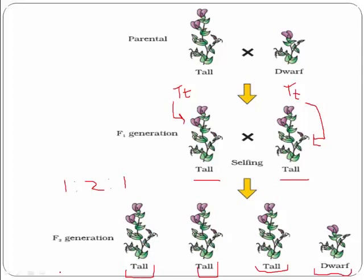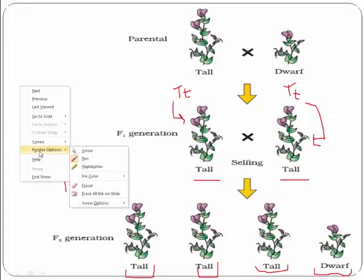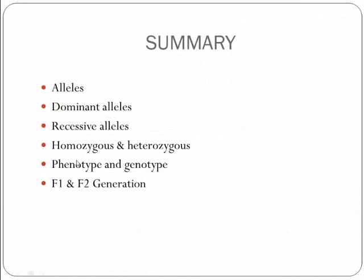So you must have understood up till now what is the F1 generation, what is the F2 generation, the phenotype, the genotype, homozygous and heterozygous, recessive alleles, dominant alleles, and alleles. In my upcoming video lecture I will explain Mendel's experiment and the crossing technique. Hope you have enjoyed this video lecture. Have a wonderful day ahead. Thank you for listening.